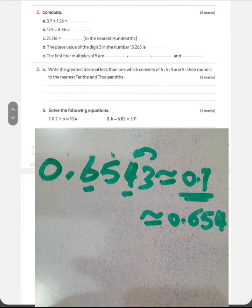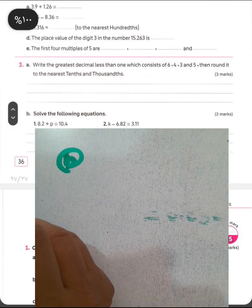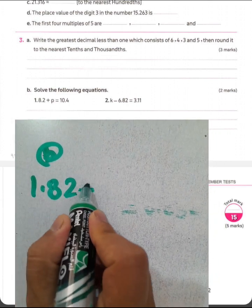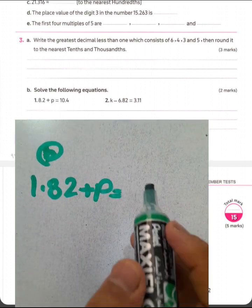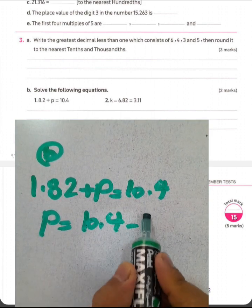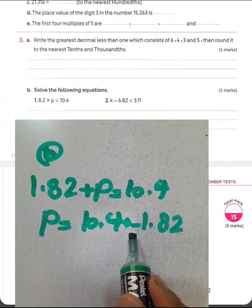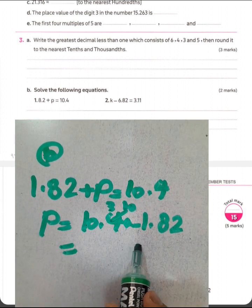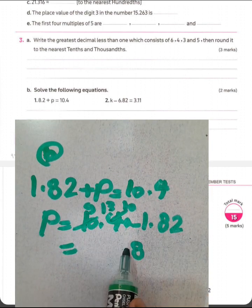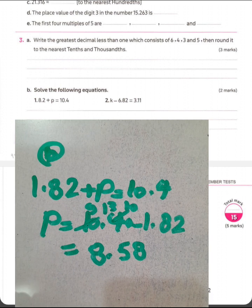Question letter B. Solve the following equations. We have here, first equation, 1.82 plus P equals 10.4. We can find the unknown here, by finding the difference between them. 10.4 subtract 1.82. And then you can write 0 behind the number here. 0 minus 2, we can't do it, borrow 1 from 4, it will be 3, and 0 will be 10. 10 minus 2 equals 8. 3 minus 8, we can't do it, borrow 1 from 10, 10 will be 9. And 13 minus 8 equals 5. 9 minus 1 equals 8. The result will be 8.58.